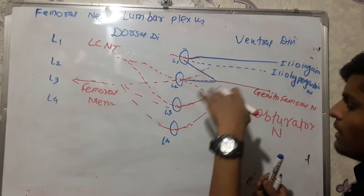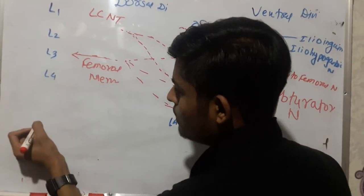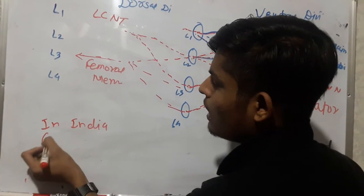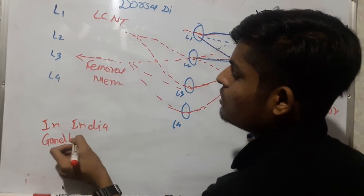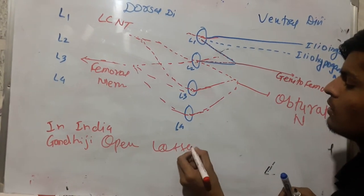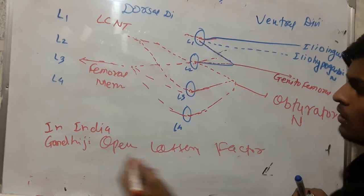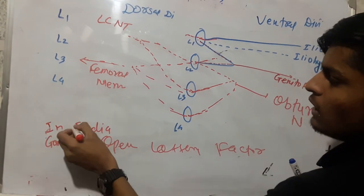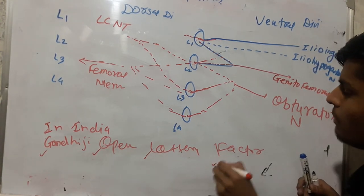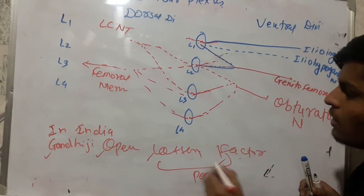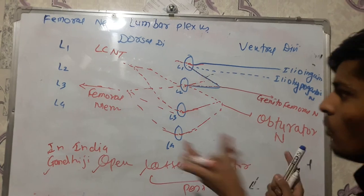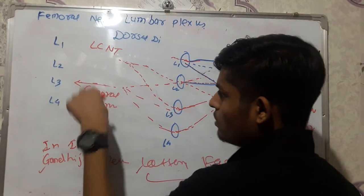Remember this about lumbar plexus. You can remember it by this mnemonic: 'In India, Gandhi Opens Lottery Factory' — standing for Ilio-inguinal, Ilio-hypogastric, Genitofemoral, Obturator, Lateral cutaneous nerve of thigh, and Femoral nerve. The last two — lateral cutaneous nerve of thigh and femoral nerve — are from posterior divisions, while the others are from ventral divisions. That's all about the lumbar plexus. Now we will discuss in detail about the femoral nerve.